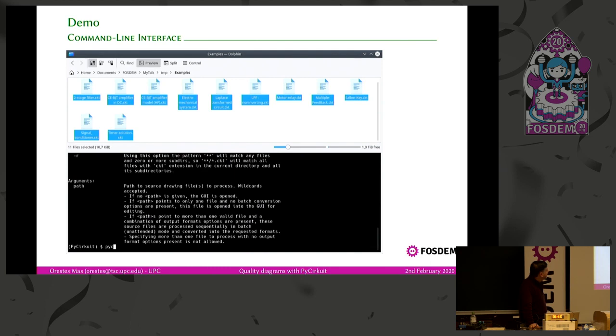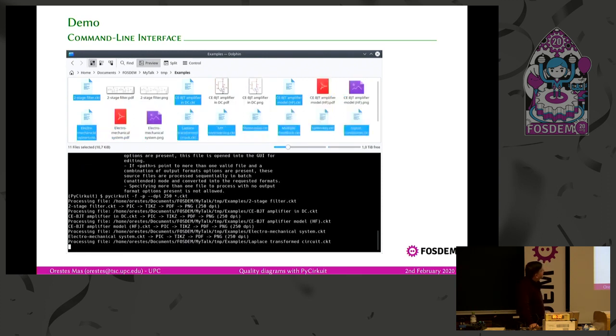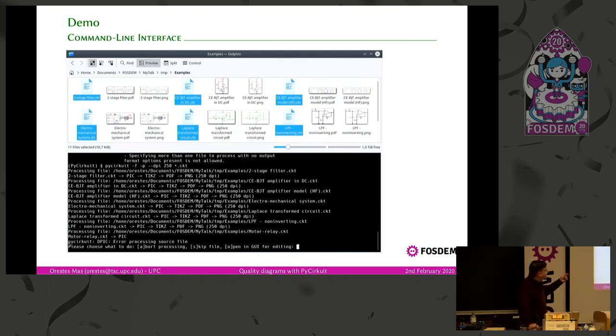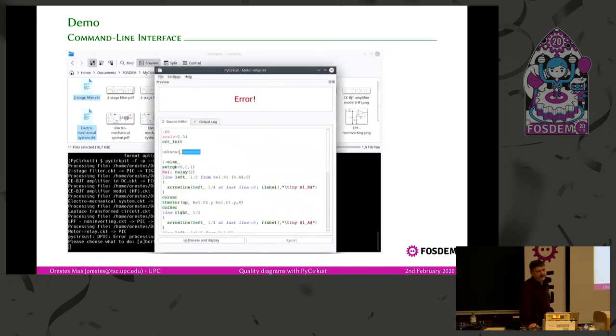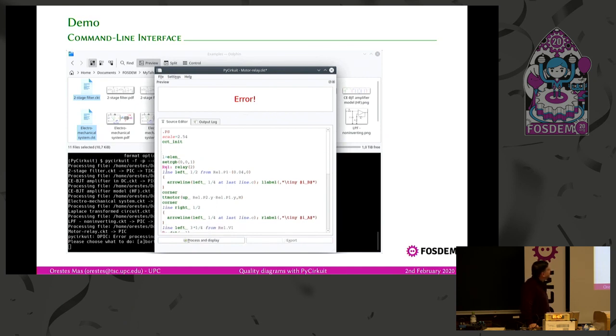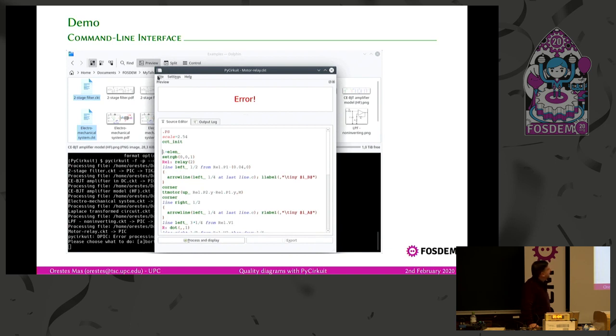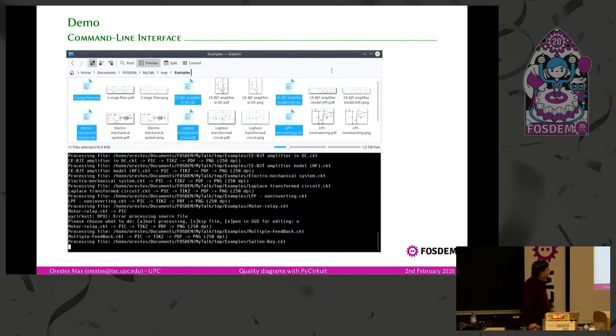So for instance, here we specify, we call PyCircuit, and we ask for a PDF format, a PNG format, with a dots per inch resolution of 250, and all the circuits ended in .ckt. If this process encounters an error, you can choose to abort, to skip this file, to abort the whole process, to skip this file, or to open the graphical user interface to see what's happening. So in this case, we choose the latter, and here's an unknown command. I put it on purpose, you can correct the error, save it, pressing Ctrl+S, or something, and the process follows.